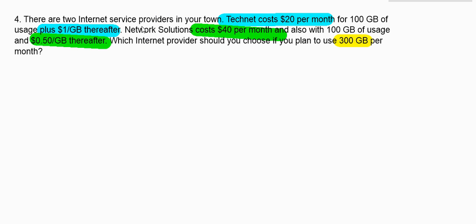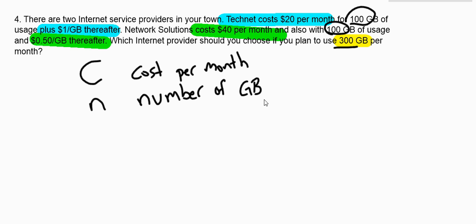We need to create some equations from the information here so that we can compare the equations. We have two different companies, TechNet and Network Solutions, and both of which have a cost per month. So C is going to be the cost per month. That's something I don't know. And what does it depend on? Well, the cost per month depends on how many gigabytes I use. So I'm going to use N for the number of gigabytes used, to be careful,